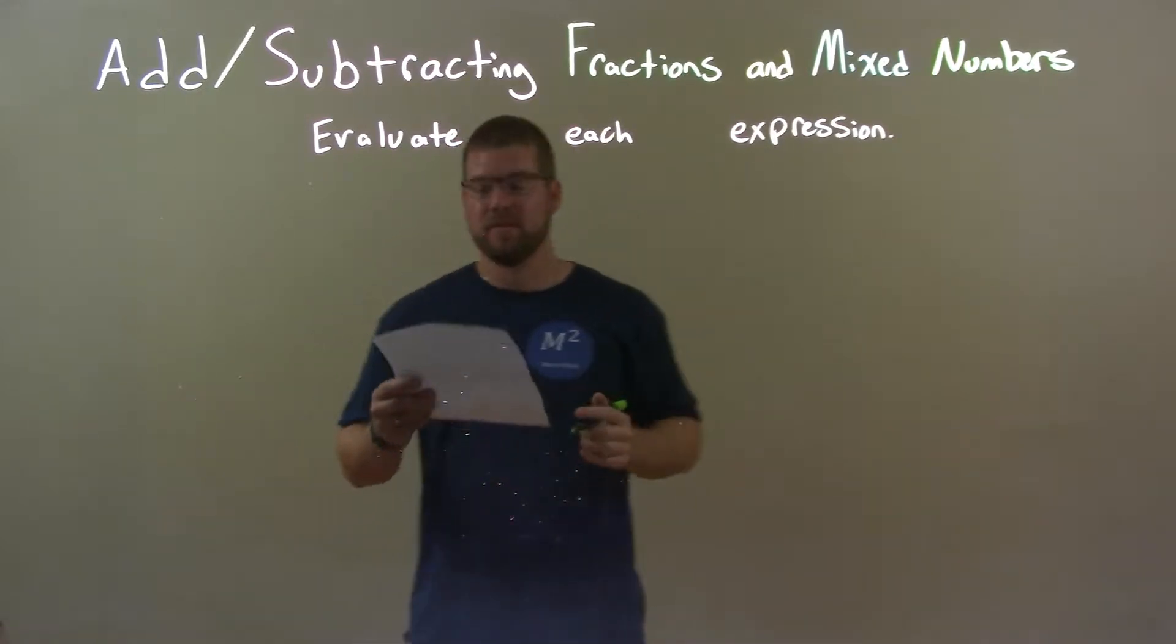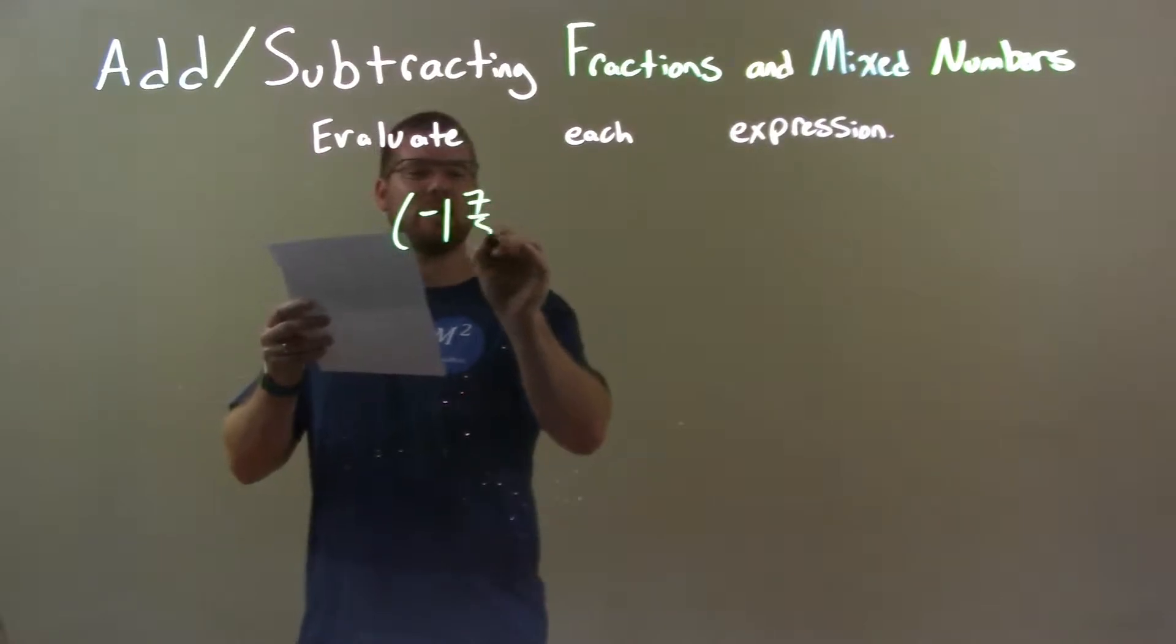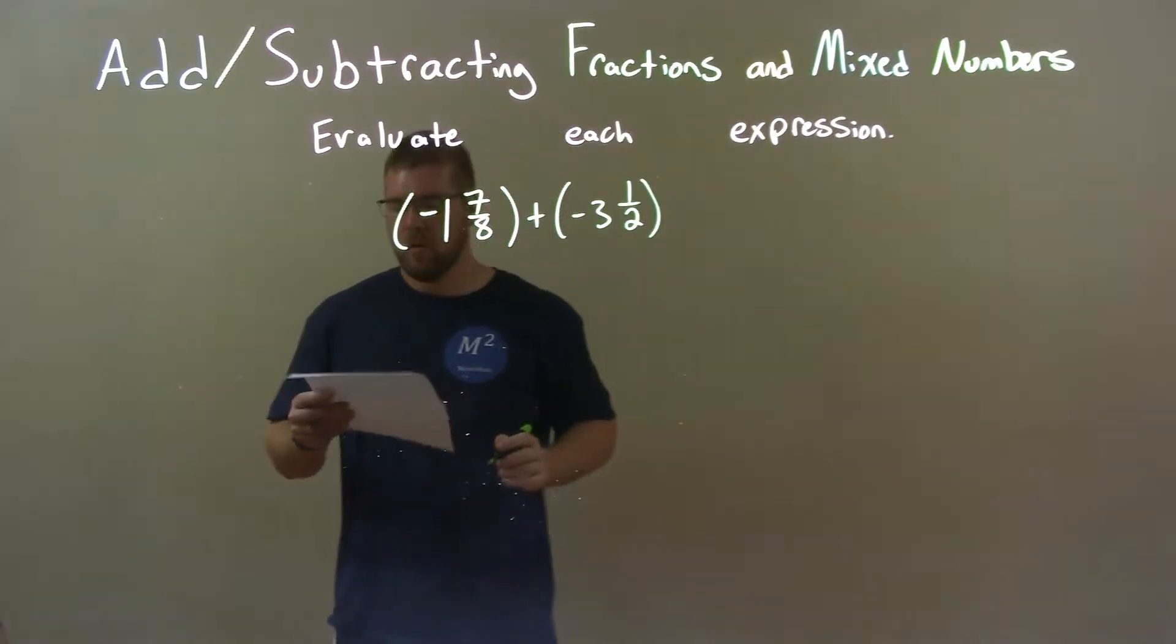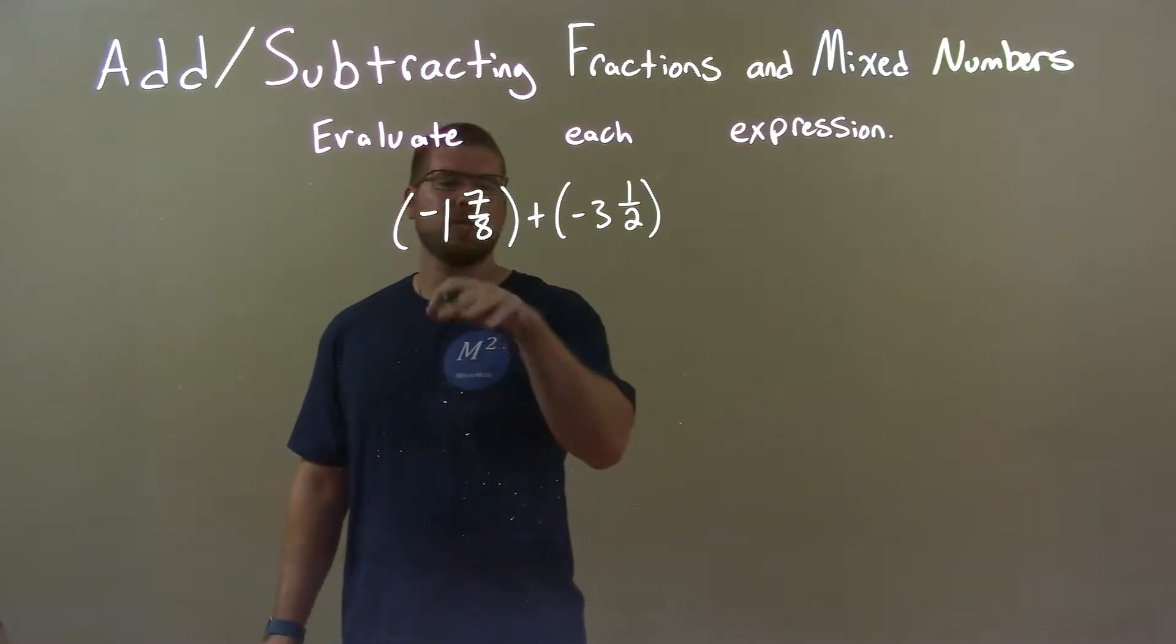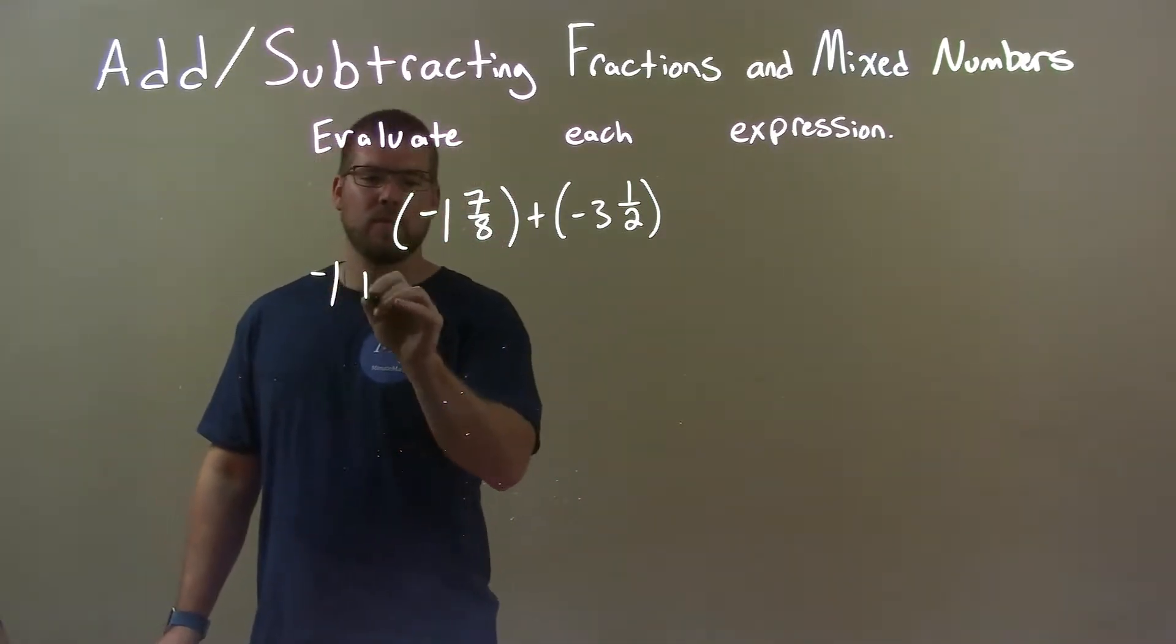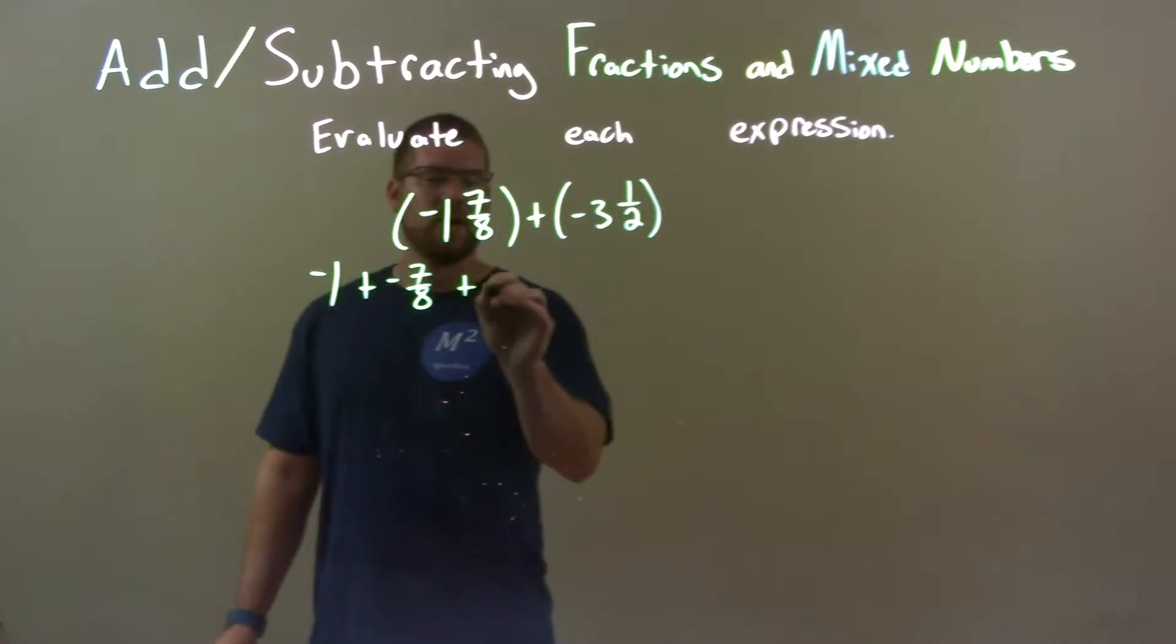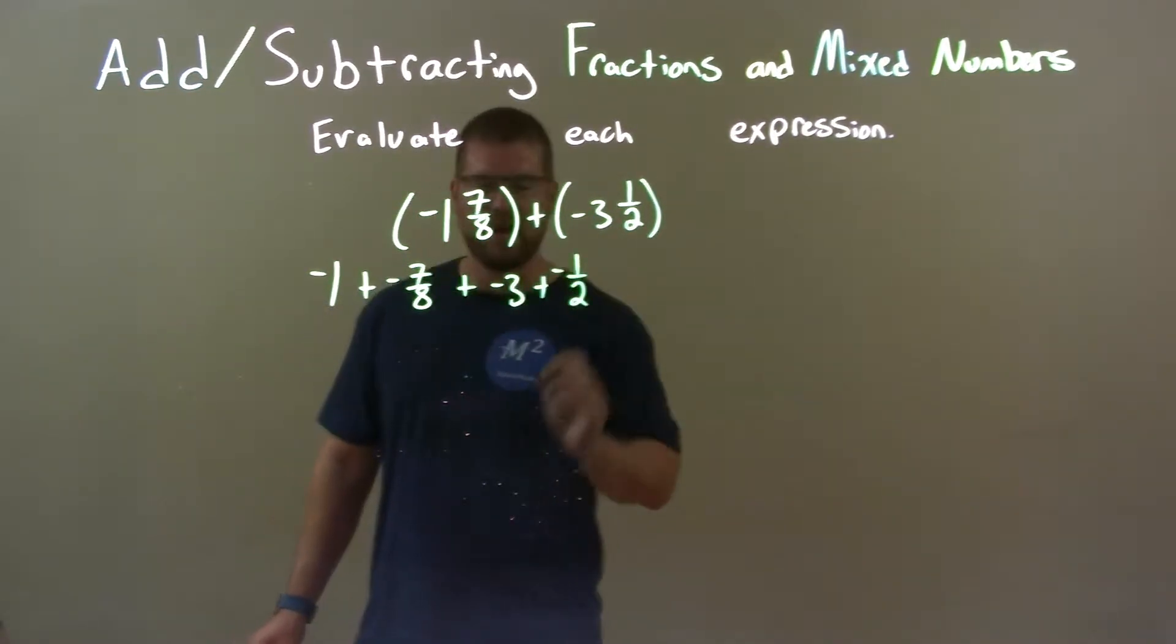If I was given these numbers, negative 1 and 7 eighths plus a negative 3 and 1 half. Well, what I'm going to do first is I'm going to break this down to be a mixed number, to be whole number and proper fraction. So we have a negative 1 plus a negative 7 eighths. Make sure we bring the negative over. Then, plus a negative 3 plus a negative 1 half.